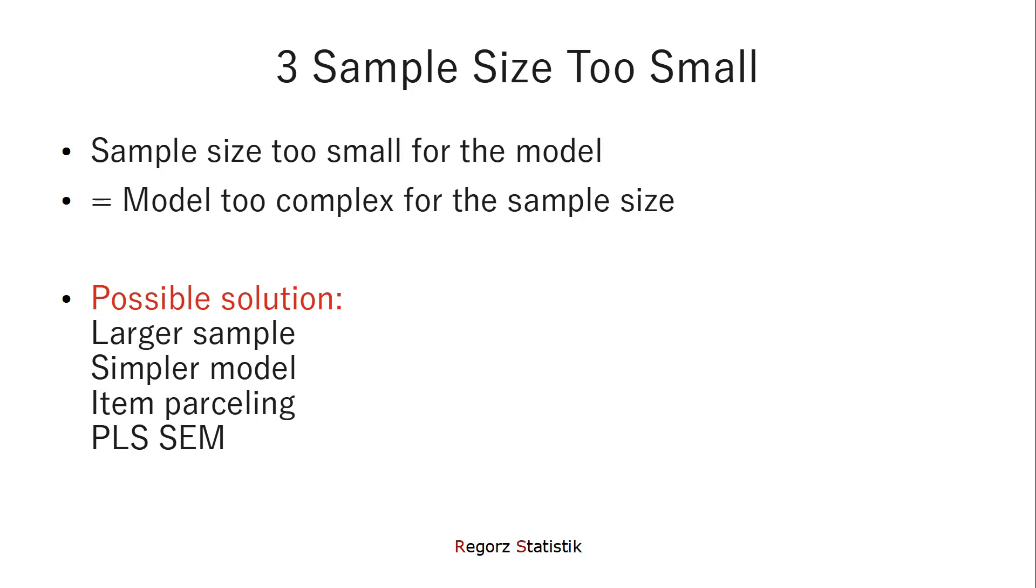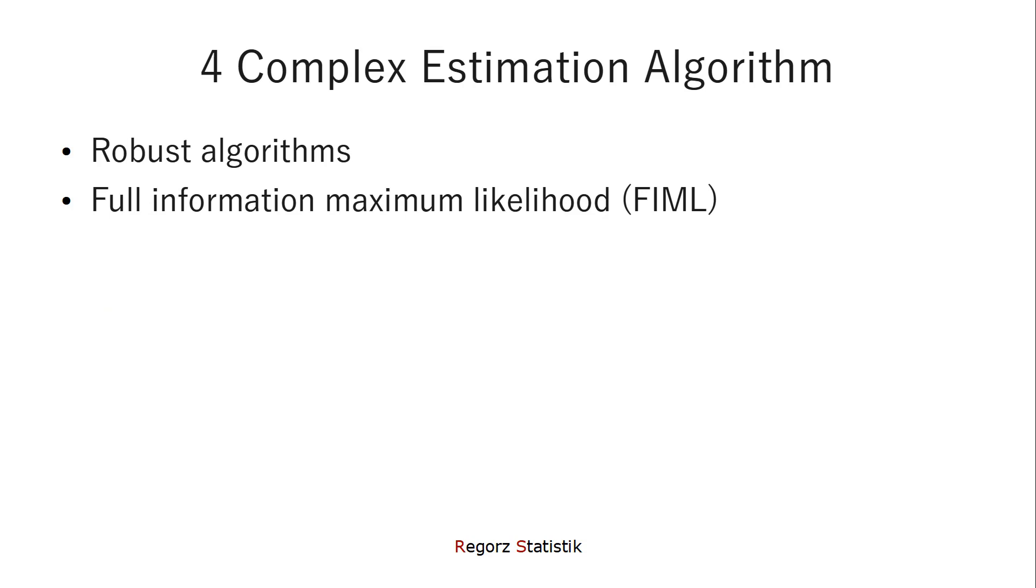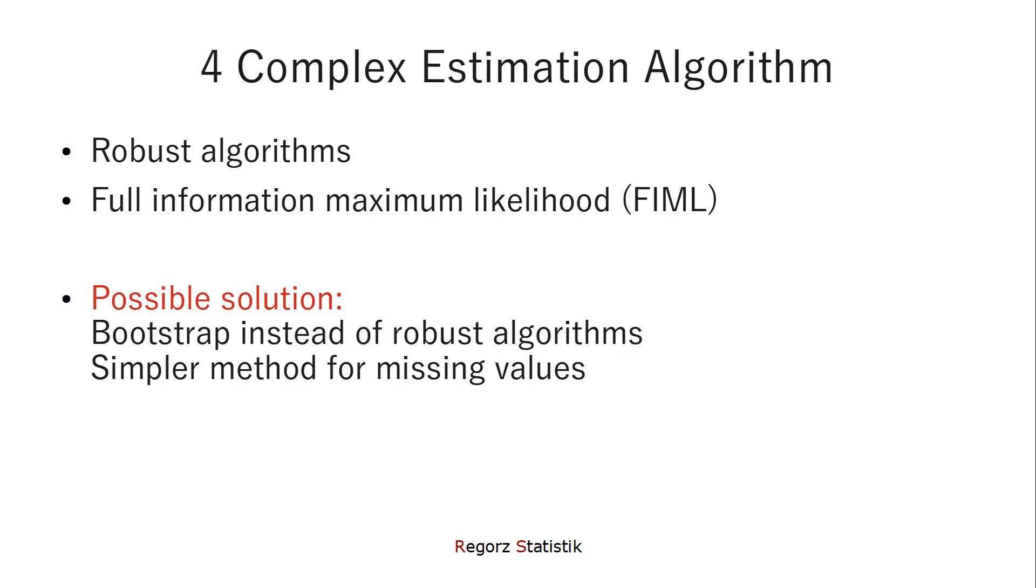However, in most cases, you will need a different software for that. That is not part of the standard SEM software like Amos or lavaan. One problem for convergence could be a very complex estimation algorithm. If you have non-normality, in many cases, you try to use a robust algorithm. Or if you have missing data, you could use full information maximum likelihood. But those algorithms are more complex, so you could run into trouble there. A possible solution? Instead of a normal, robust algorithm like Huber-White or Satorra-Bentler, you could use bootstrapping. Because the basic algorithm behind bootstrapping is still maximum likelihood. In the case of missing data, you could use a simpler method for dealing with missing values. For instance, using the EM algorithm.